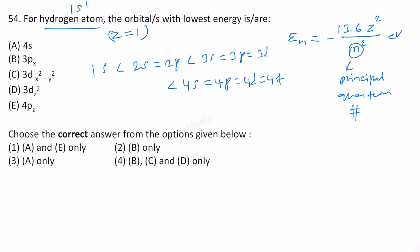This means in this case these are degenerate, and 4s, 4p, 4d, 4f, they are also degenerate. But here the n value equals 3 and here the n value is 4. Therefore these are lowest: the 3p, 3d x squared minus y squared, 3d z squared. That is the lowest because the n value is 3. Therefore option 4 is correct.